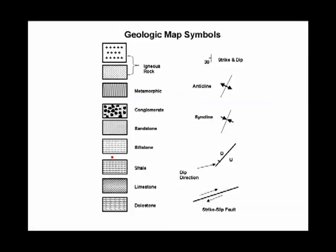These are the geologic map symbols that we tend to use. Now, if you've got color, different rock layers are given different colors. But if color is not available, there are some very standard things.